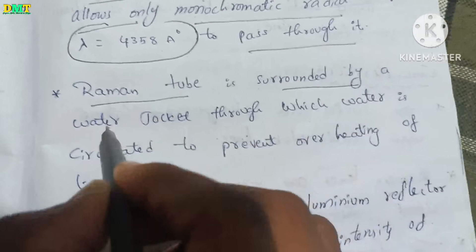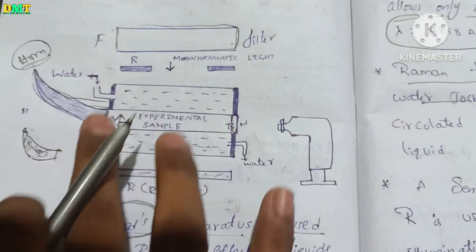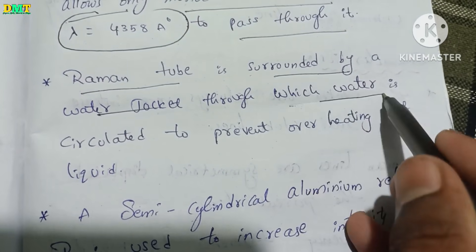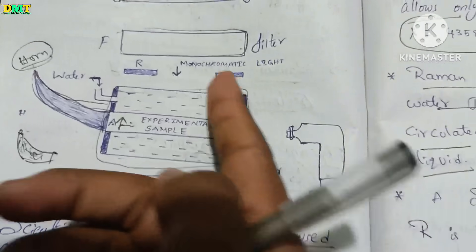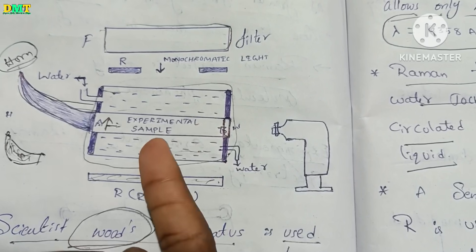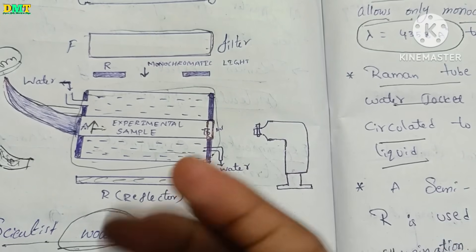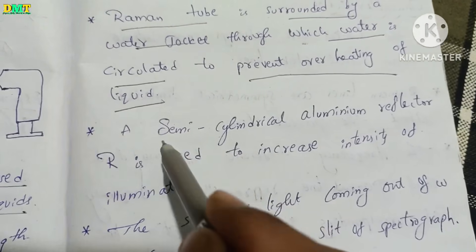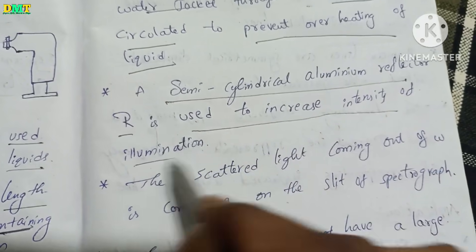The Raman tube is surrounded by a water jacket, in which water is circulated to prevent overheating of the liquid. The semi-cylindrical aluminum reflector R is used to increase the intensity of illumination.